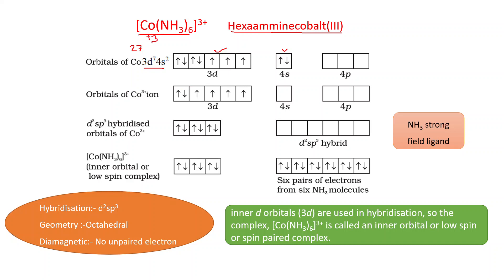To find the oxidation state: if the name is written, we can read it directly; if the formula is given, suppose the oxidation state is x. Since NH₃ is neutral and the complex charge is +3, we get x = +3. The d-electron configuration in Co³⁺ becomes 3d⁶ — two electrons from 4s and one electron from 3d are removed. These six electrons in the d sub-shell have two paired and four unpaired electrons.